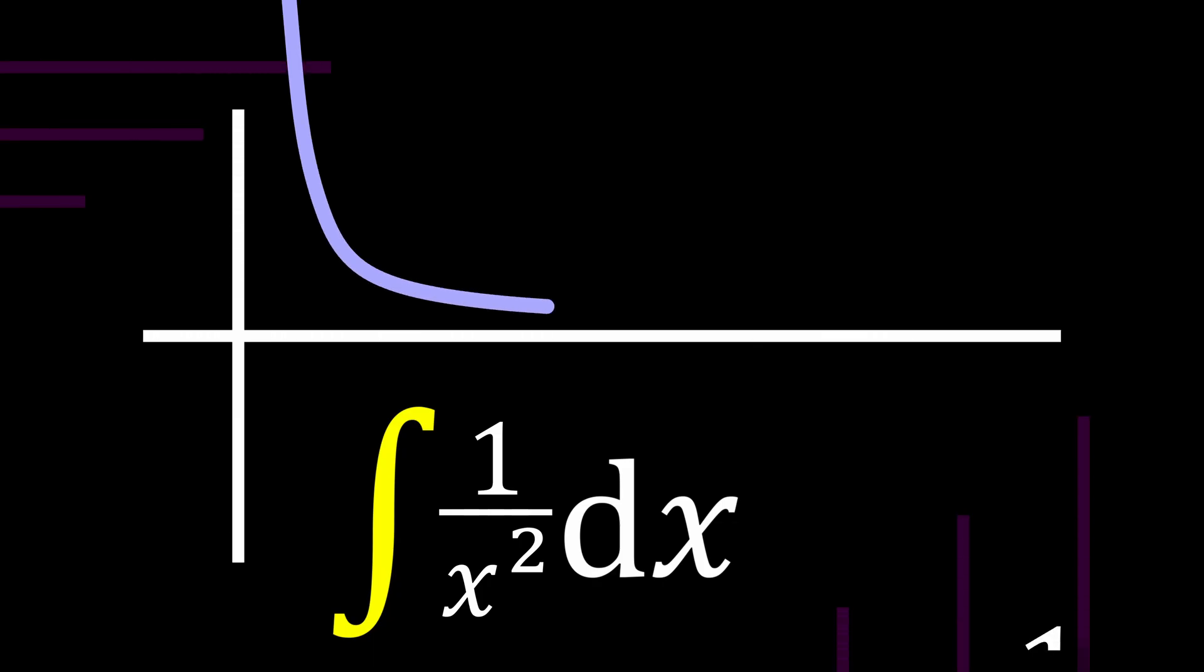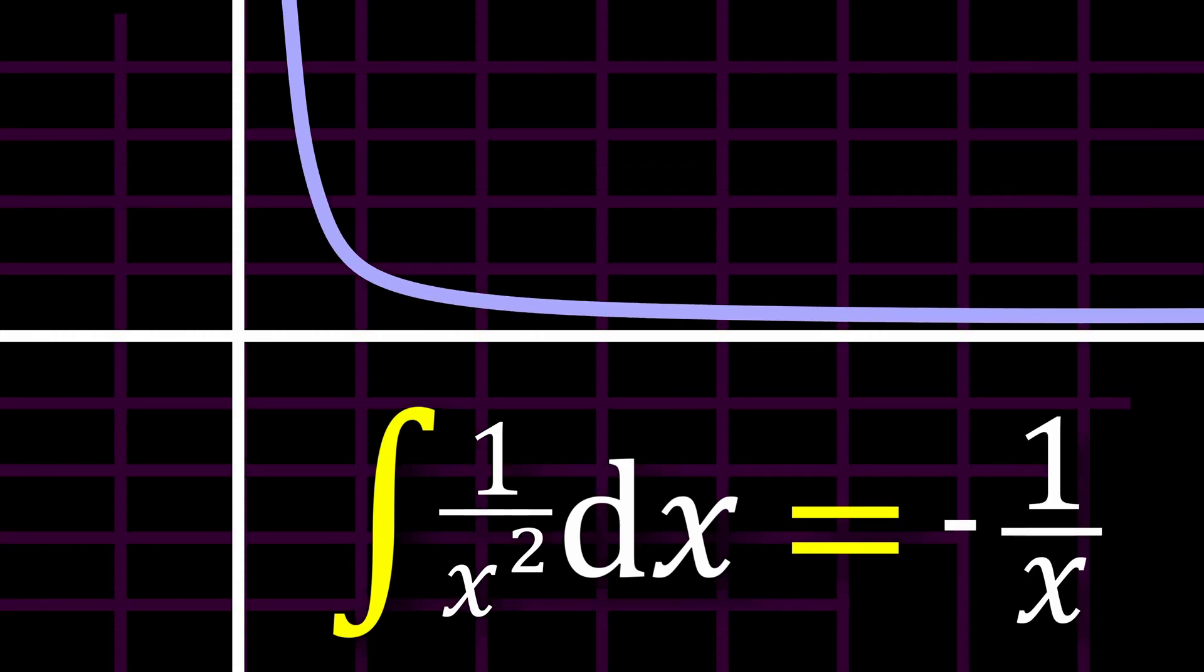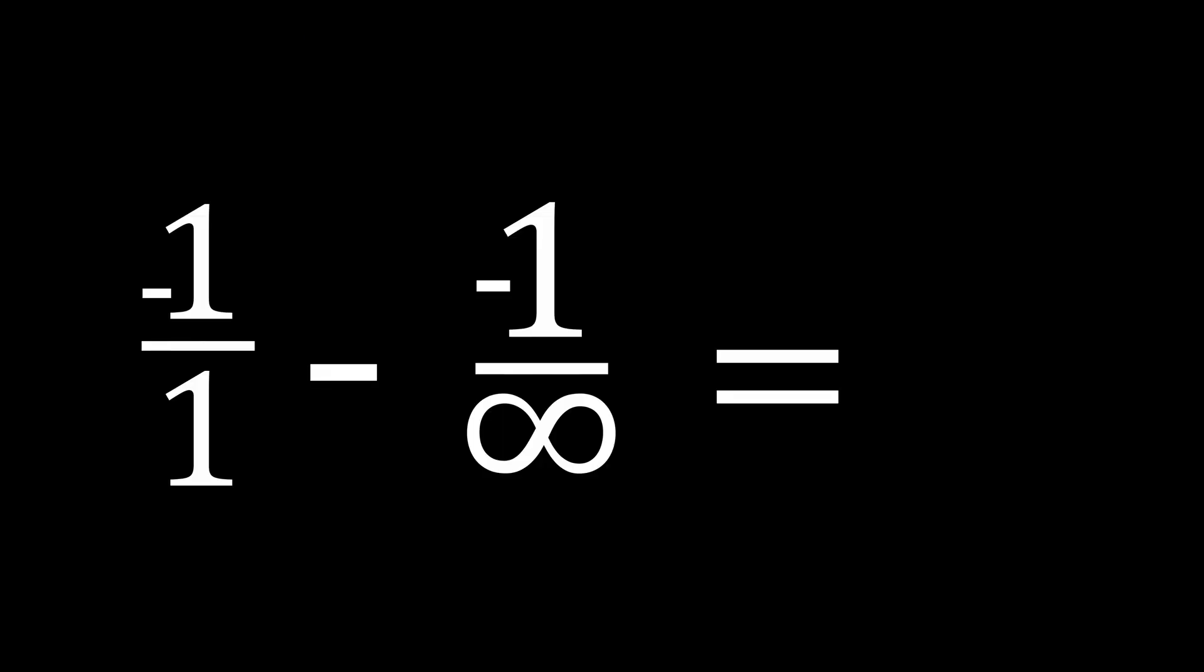Integrating gives us negative 1 over x, and when evaluated from 1 to infinity, it results in a finite value of 1. Just like that, Gabriel's horn unveils the secret behind its paradoxical finite volume.